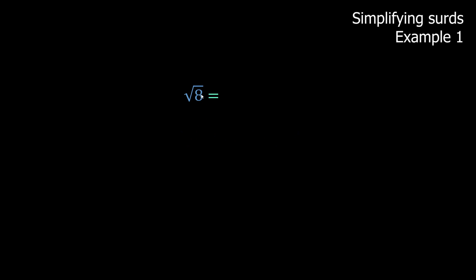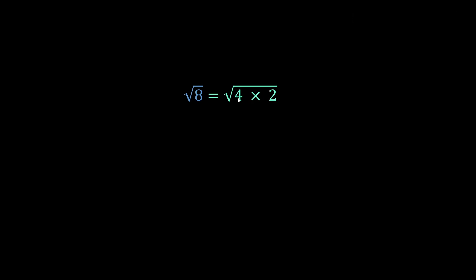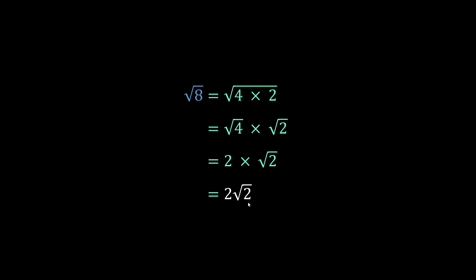Square root of eight — we can change eight into four times two. When we try to simplify surds, we look for a square number. Four is a square number, so the square root of four times two is the same as square root of four times square root of two. The square root of four gives us a nice integer: two. So now this is two times square root of two, which we call two root two. Square root of eight in simplified form is two root two.